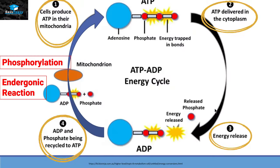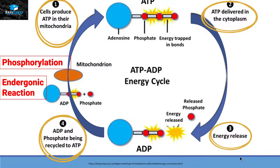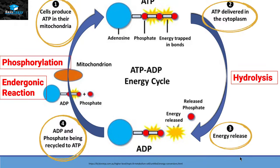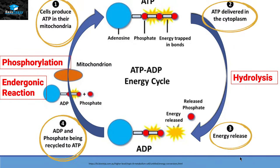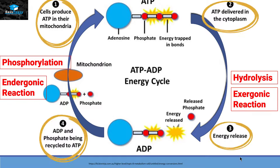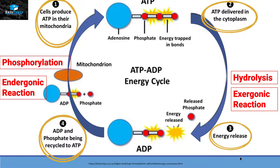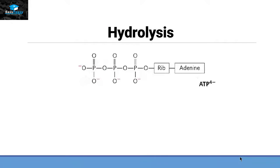Now, having discussed the phosphorylation side of the ATP-ADP energy cycle, let's move on towards the right-hand side. When ATP is converting into ADP, that process is called hydrolysis, and as it releases energy, the reaction is exergonic. Let's see how ATP converts itself into ADP.